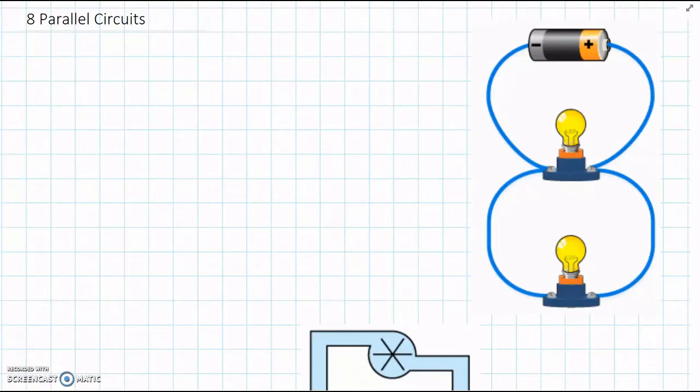Now we're going to look at the other type of circuit. So in the last video we looked at series circuits, which is where all the parts are connected in a continuous loop.